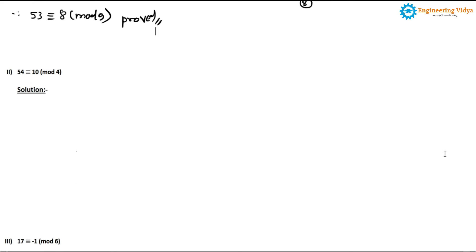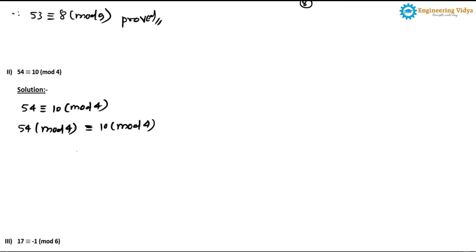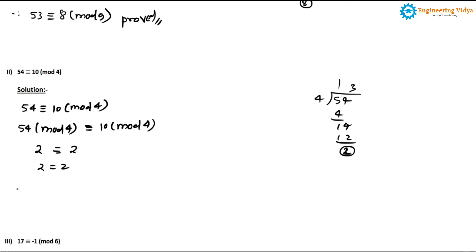In problem 2, we prove 54 ≡ 10 (mod 4). Applying the rule: 54 mod 4 = 10 mod 4. Calculating 54 mod 4: 4 goes 13 times giving 52, remainder is 2, so the left-hand side is 2. For 10 mod 4: remainder is also 2. Since 2 = 2, the statement 54 ≡ 10 (mod 4) is a true statement, hence it is proved.